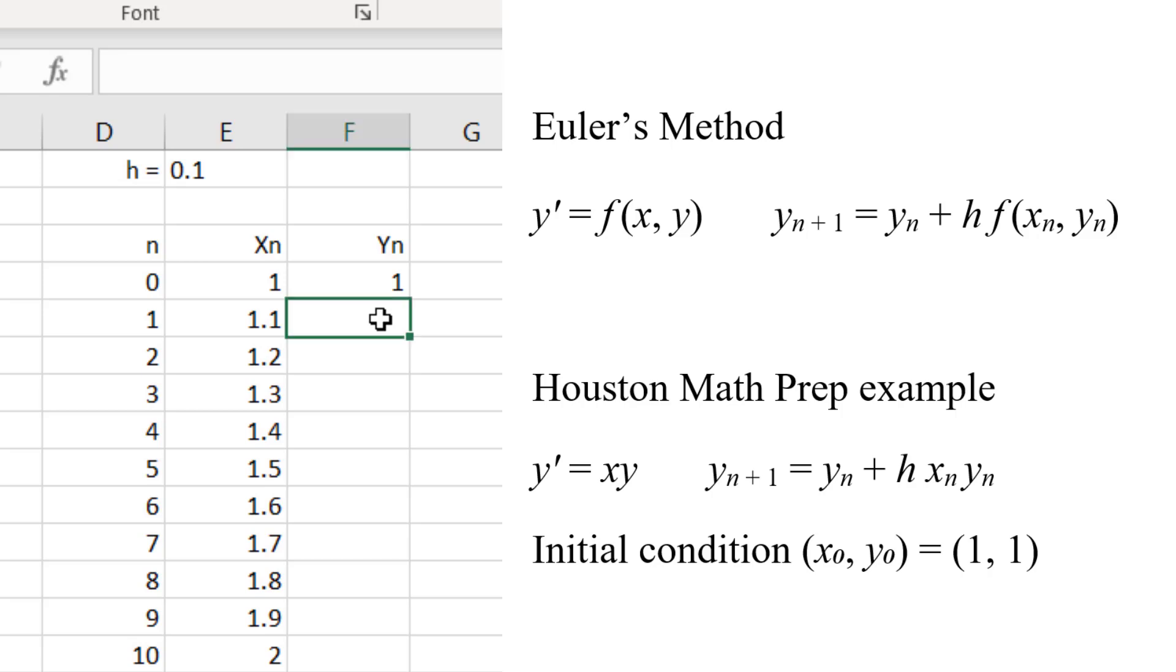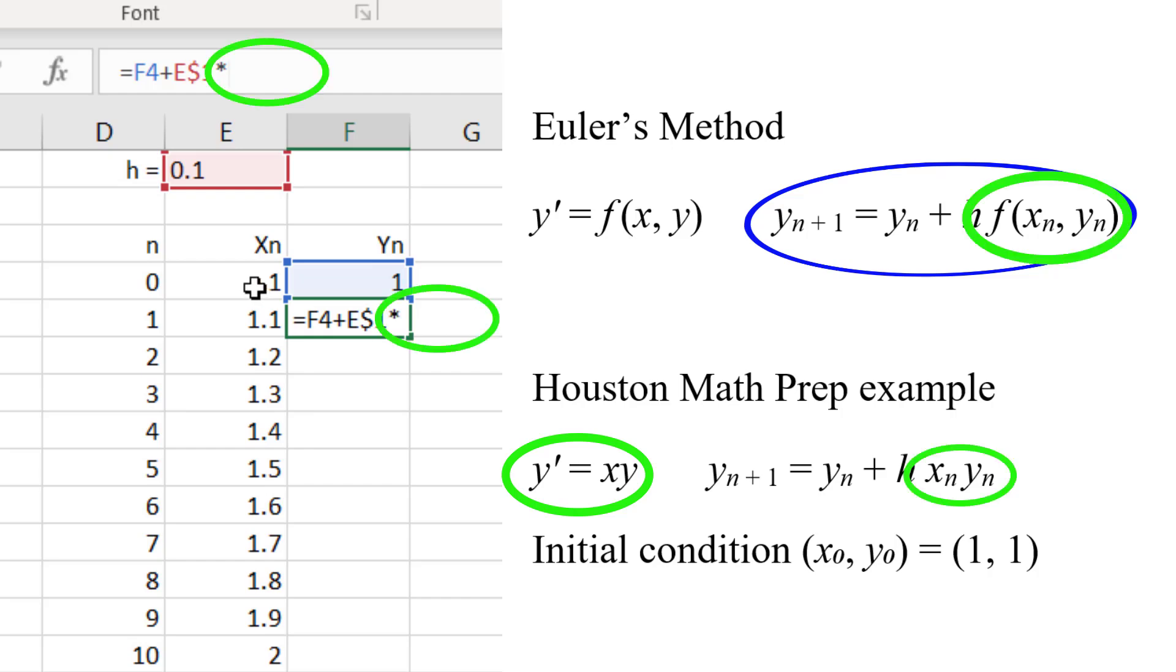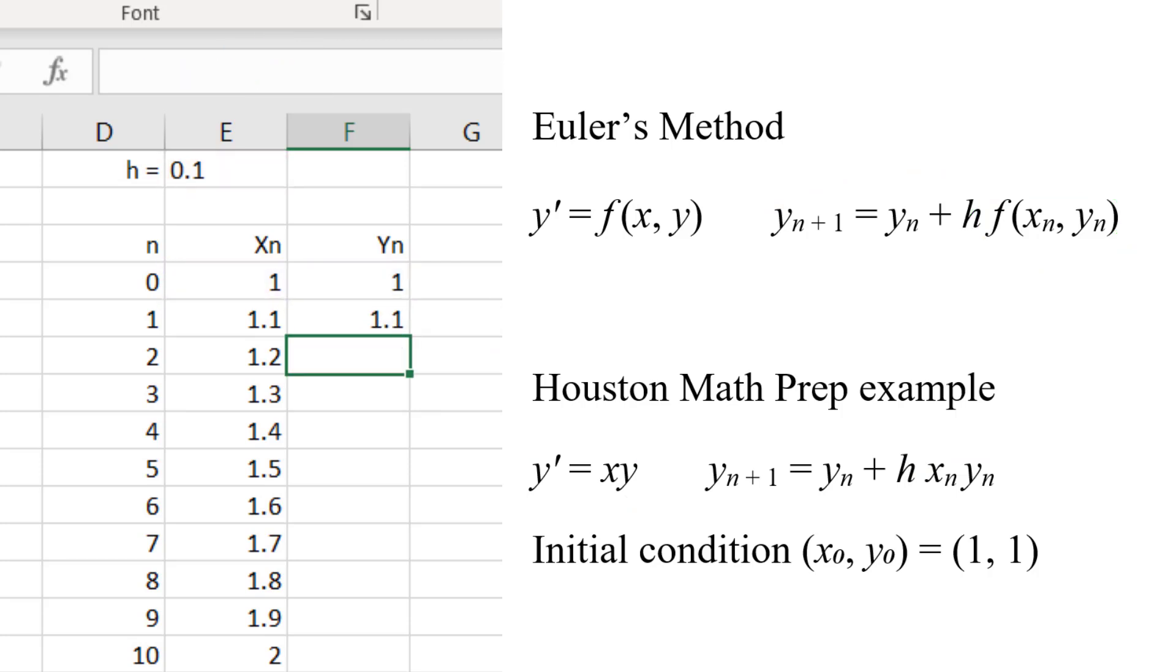Finally, we fill in the last column. As Houston Math Prep explained, the value of y is the previous value of y plus h times the slope function. We put the dollar sign before the line number for h as before. In the problem from the Houston video, the slope function is x times y. So that is what we want here. The x from the previous step times the y from the previous step. If you are solving a different problem, you should use the slope function from your problem here. Then we use Ctrl D to fill down as before.